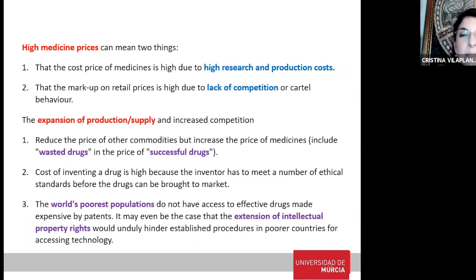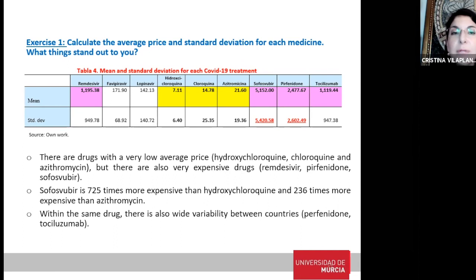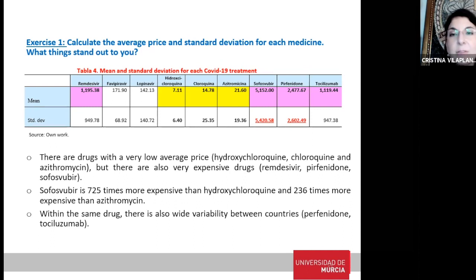Students then used an Excel sheet to do exercises. First, they calculated the mean average price of each drug taking into account all countries, and also the standard deviation. They confirmed that hydroxychloroquine, chloroquine, and azithromycin were the cheapest drugs, and sofosbuvir, pirfenidone, and Remdesivir the most expensive. The underlined figures indicate that sofosbuvir and pirfenidone experienced the highest standard deviation — for the same drug there is high dispersion between countries, indicating high inequality.